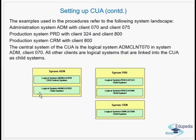An example system landscape: you have system ADM, system production PRT, and system CRM. The administration system ADM has two clients: 070 and 075. The production system PRT has clients 324 and 800. The production system CRM has client 800.